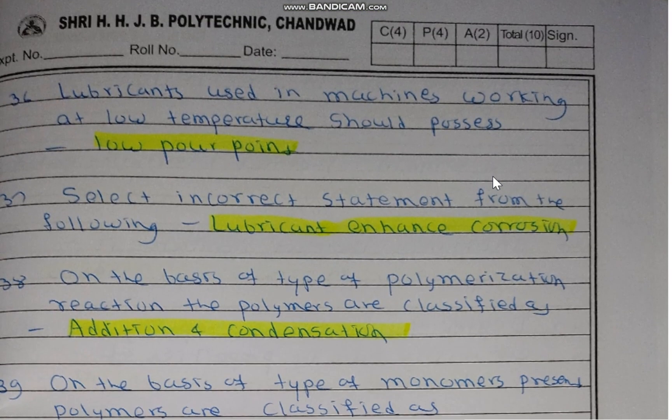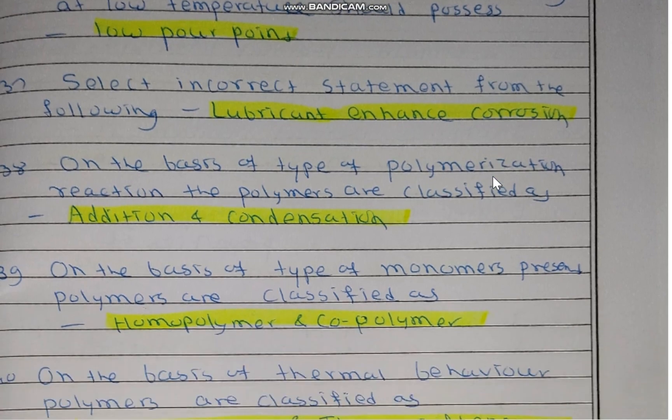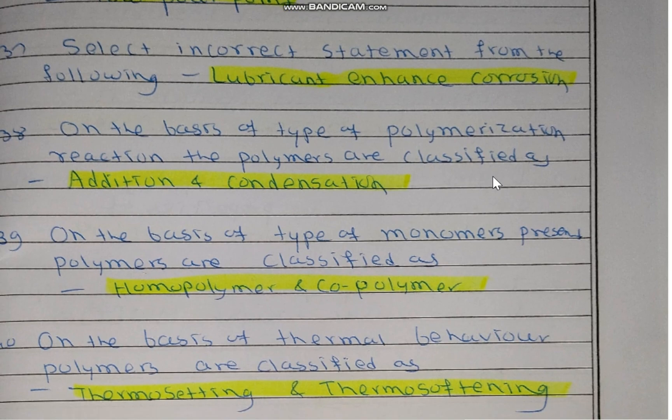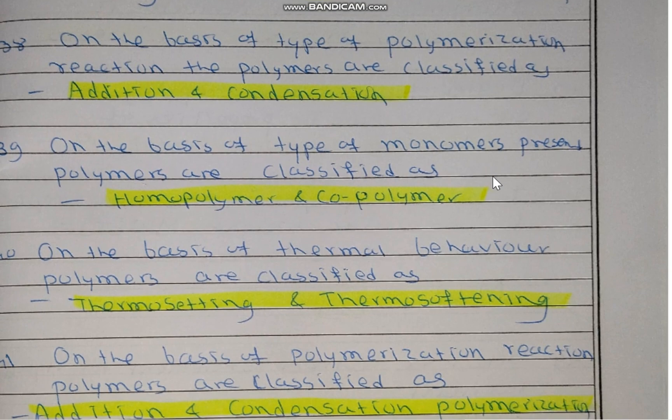Lubricants used in machines working at low temperature should possess a low pour point. Select the incorrect statement: 'Lubricant enhances corrosion' — this is the incorrect statement.